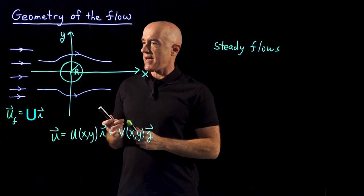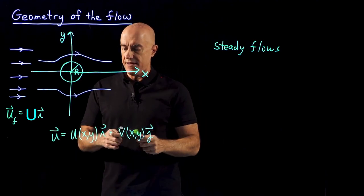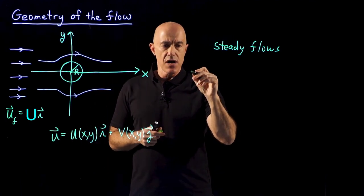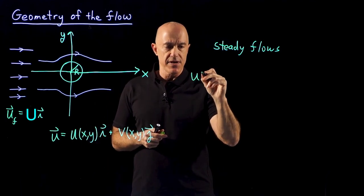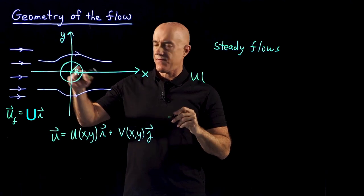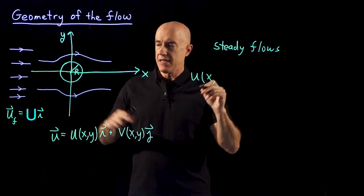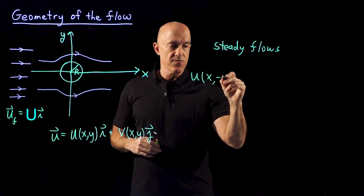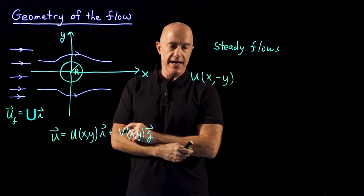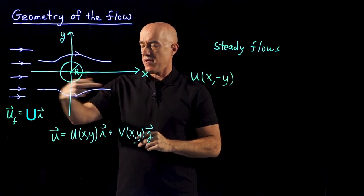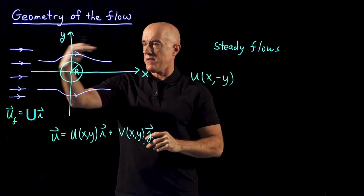So what does that mean in terms of u and v? Well, if we look at the velocity field at some fixed x, but in the lower half of the plane, so if y is positive at negative y, the x component is going to be identical, right?